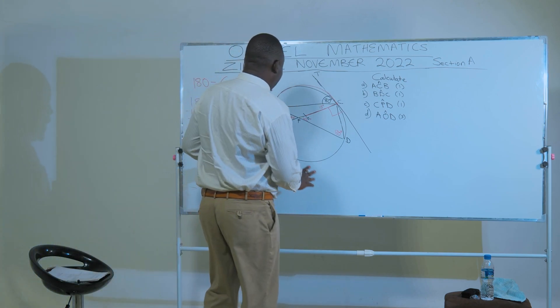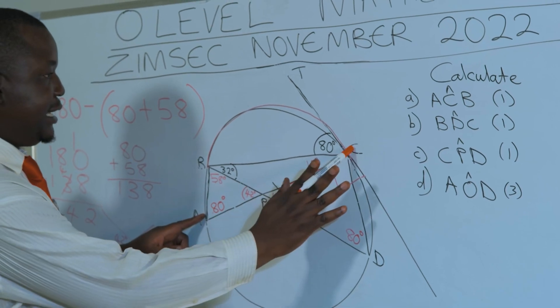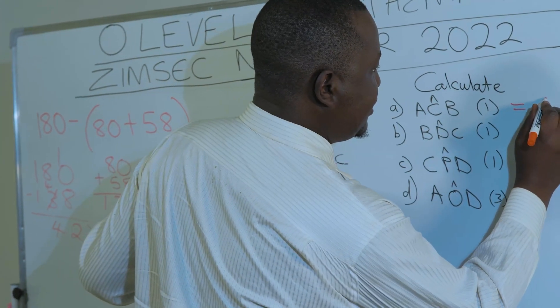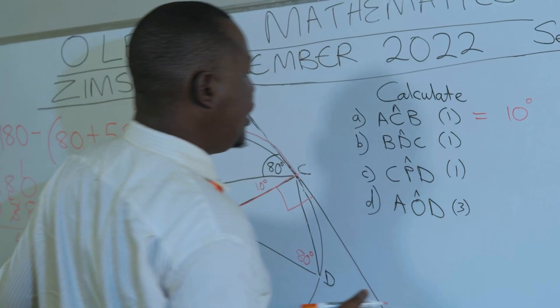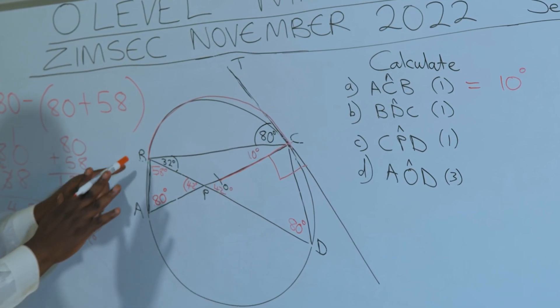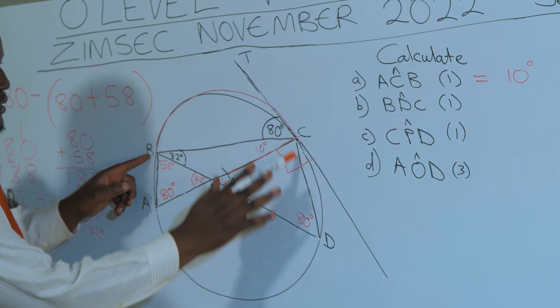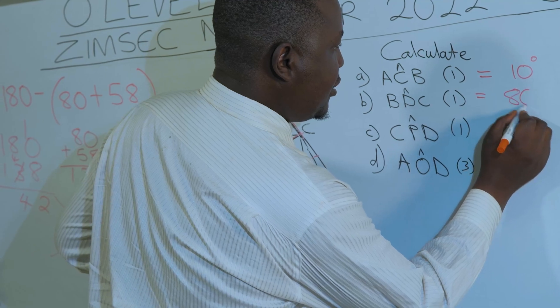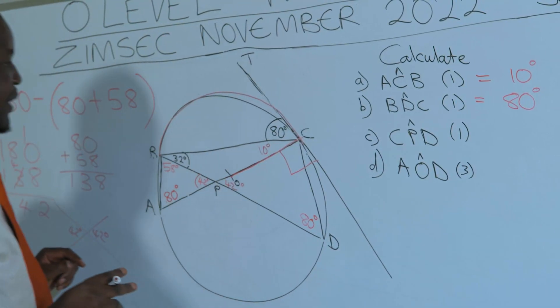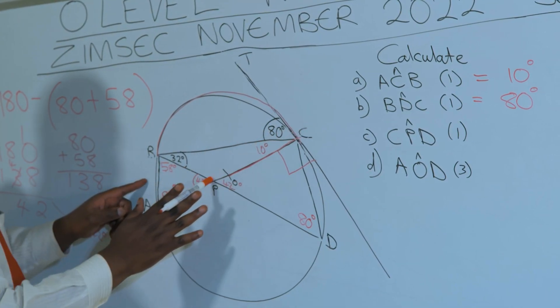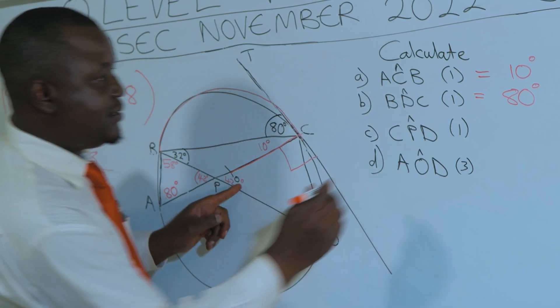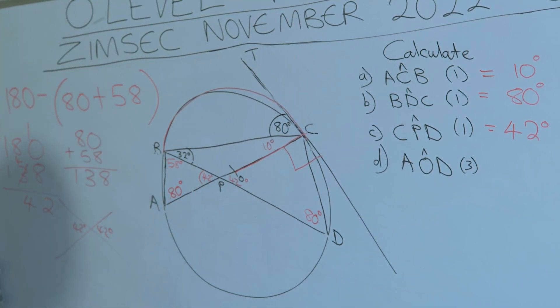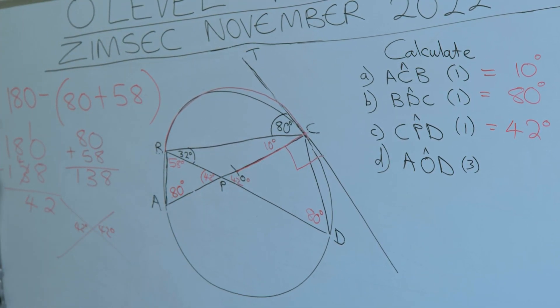And we have completed the questions that are required by the examiner. So angle ACB is 10 degrees. Angle BDC is 80 degrees. Angle CPD here is 42 degrees. And last but not least, angle AOD. We haven't calculated it yet.